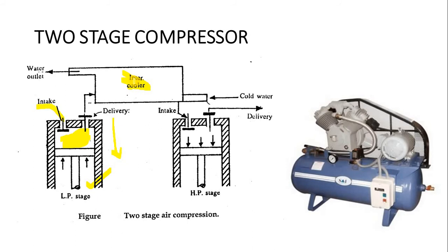The main function of the intercooler is to keep the pressure constant while reducing the temperature. To cool the air, water is continuously circulated through that area — a water jacket is provided for better heat transfer. From the intercooler, air at lower temperature with constant pressure enters the second stage, which is the high pressure cylinder, through the intake valve.